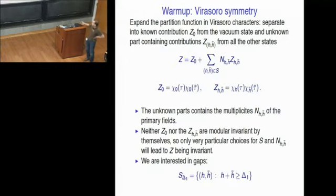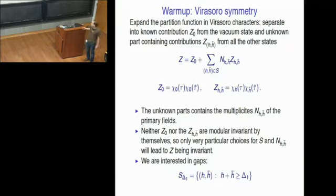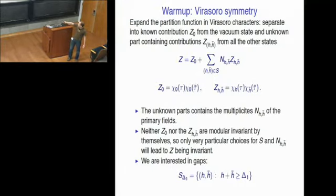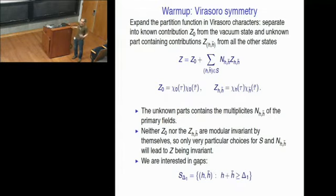Starting with the warm-up example: the torus vacuum amplitude can be written as a partition function, expanded as a sum of contributions coming from the characters of the representations of the Virasoro algebra. This partition function C is for a completely general conformal field theory of some arbitrary central charge c. We know this partition function contains the vacuum exactly once, and the vacuum will have a bunch of descendants contained in the term Z_0, given by some linear combination of left-moving and right-moving characters. The rest of the partition function — a bunch of primary fields with some characters and certain multiplicities n — is a priori completely unknown.